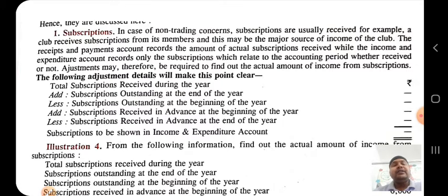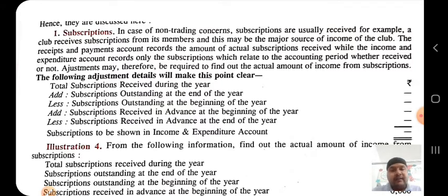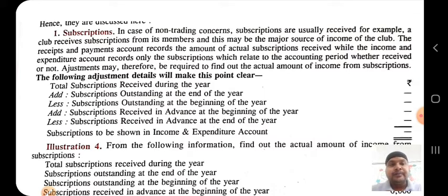You know very well that in class 11th we already discussed the matching concept. When we are calculating profit of any year of the business, the income should be of the current year and the expense should also be of the current year. The receipts and payment account provides information on cash receipts and cash payments, whereas the income and expenditure account is just like a profit and loss account. For profit and loss, the matching concept says we take current year income and current year expense.